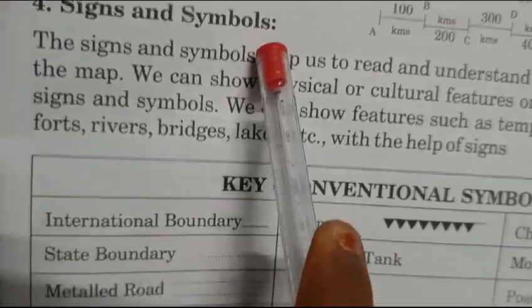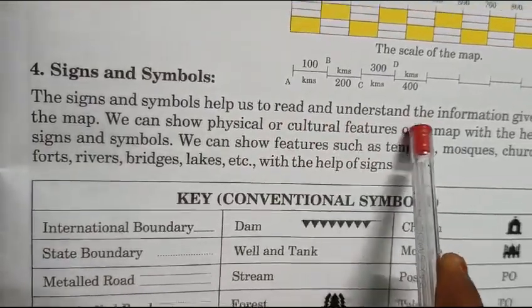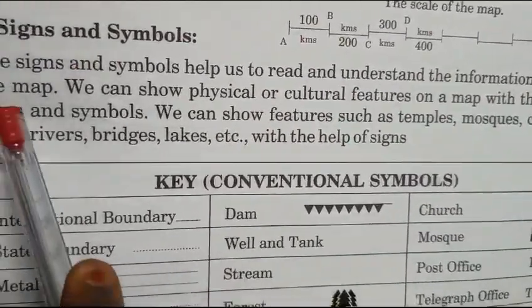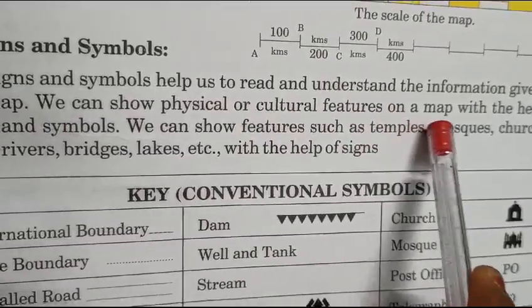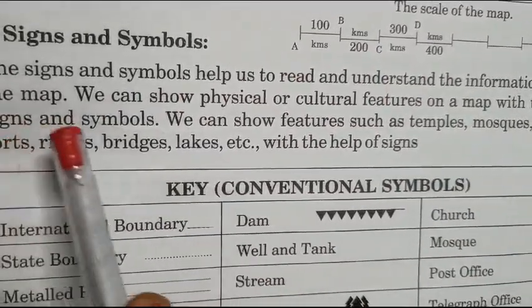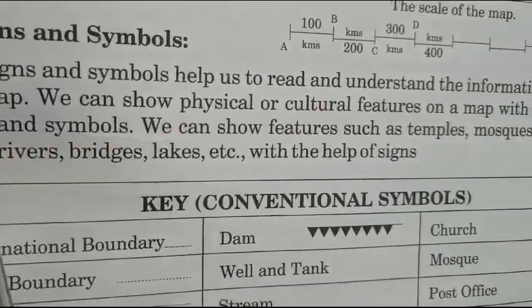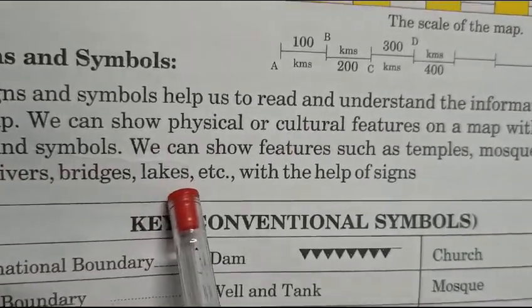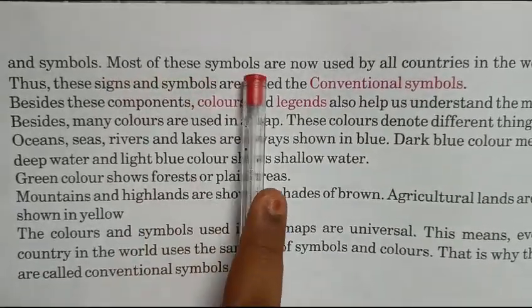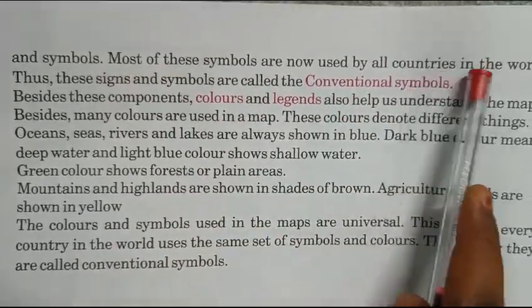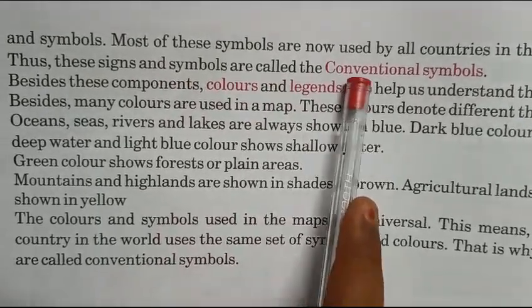Signs and symbols. The signs and symbols help us to read and understand the information given on the map. We can show physical or cultural features on a map with the help of signs and symbols. We can show features such as temples, mosques, churches, forts, rivers, bridges, lakes, etc. with the help of signs. Most of these symbols are known and used by all countries in the world. Thus, these signs and symbols are called conventional symbols.